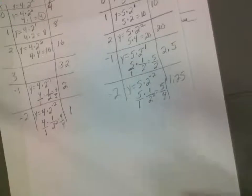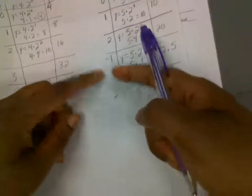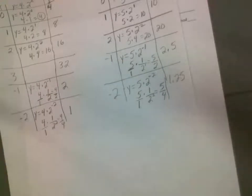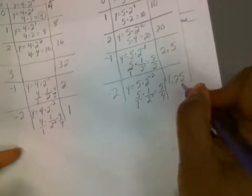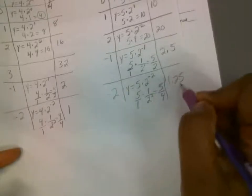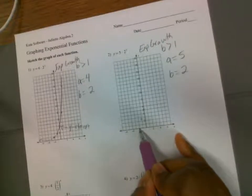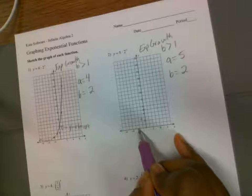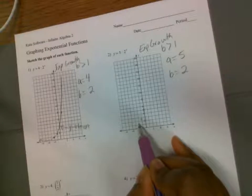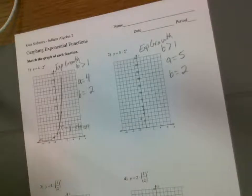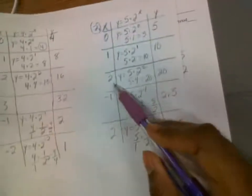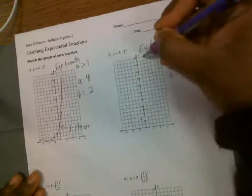I'm working backwards, so instead of multiplying to get to the next number, I'm going from right to left, dividing by 2. Now let's do negative 3. We got y is equal to 5 times 2 to the negative 3. This gives us 5 times 1 over 2 to the positive 3. 2 times 2 times 2 is 8, so this is 5 over 8, which is 0.625. So go to negative 3 and a little bit over the halfway mark.